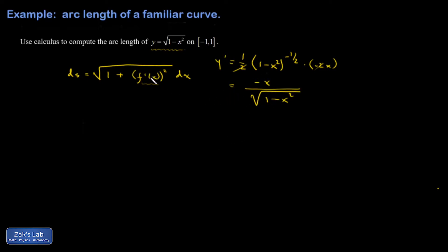And I'll have to square that when I put it into this expression. So my total arc length is the sum of all the contributions. So I'm going to add all those up as x goes from negative 1 to 1. And then inside this integral, I have a 1 plus x squared over 1 minus x squared dx.